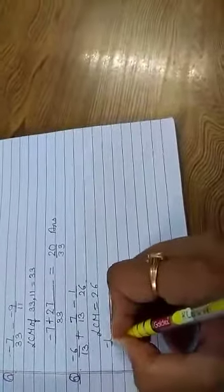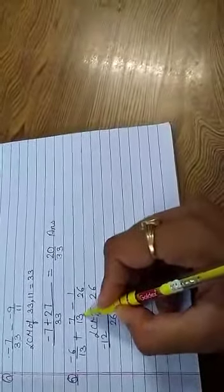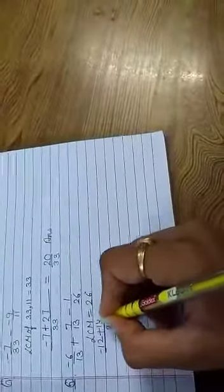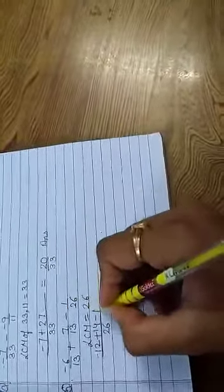26 divided by 13 will be 2, 2 multiply minus 6 is minus 12. 26 divided by 13 will be 2, 2 multiply 7 is 14. 26 divided by 26 is 1, 1 multiply 1 is 1.